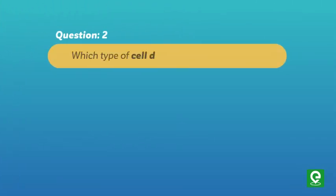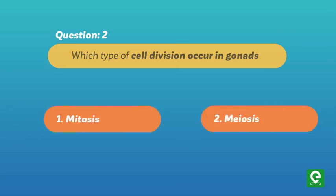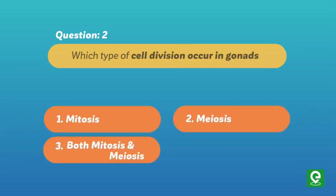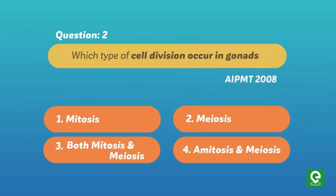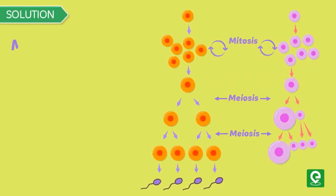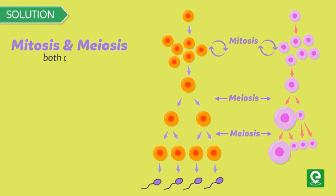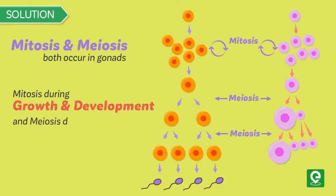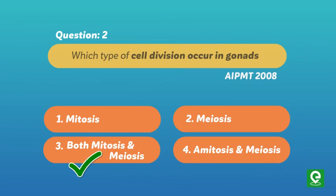Question 2: Which type of cell division occurs in gonads? 1. Mitosis, 2. Meiosis, 3. Both mitosis and meiosis, or 4. Amitosis and meiosis. This question was asked in AIPMT 2008. Solution: Mitosis and meiosis both occur in gonads—mitosis during growth and development and meiosis during gametogenesis. Hence option 3 is correct.